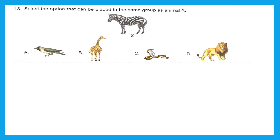Question 13: select the option that can be placed in the same group as animal X, which is zebra. Let's try based on eating habits. Option A, crow, eats both plants and animals, whereas zebra eats only plants. B is giraffe — this can be placed in the same group because giraffe is also a plant-eating animal. Option C and D, snake and lion, are flesh-eating animals and cannot be placed in the same group as zebra. The right answer is option B, giraffe.